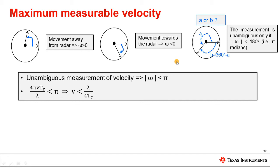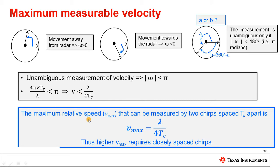Unambiguous measurement of velocity requires that the phase change across the two chirps is less than pi. Using the expression for phase change from earlier, this gives an expression for the maximum unambiguous velocity that can be measured. The takeaway is that the maximum relative velocity measurable by two chirps spaced Tc apart is given by this expression, and a higher Vmax requires that the chirps be closely spaced.